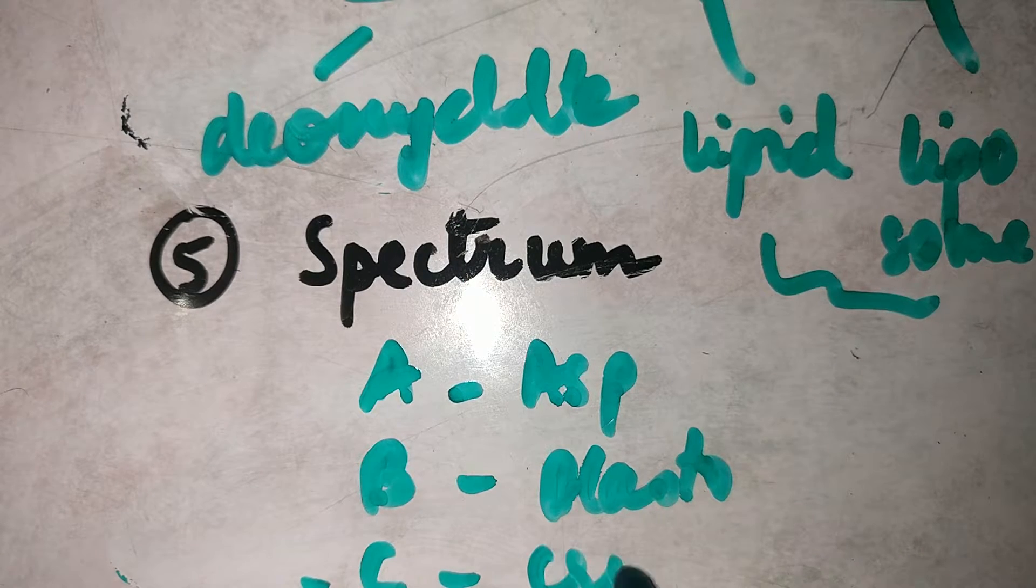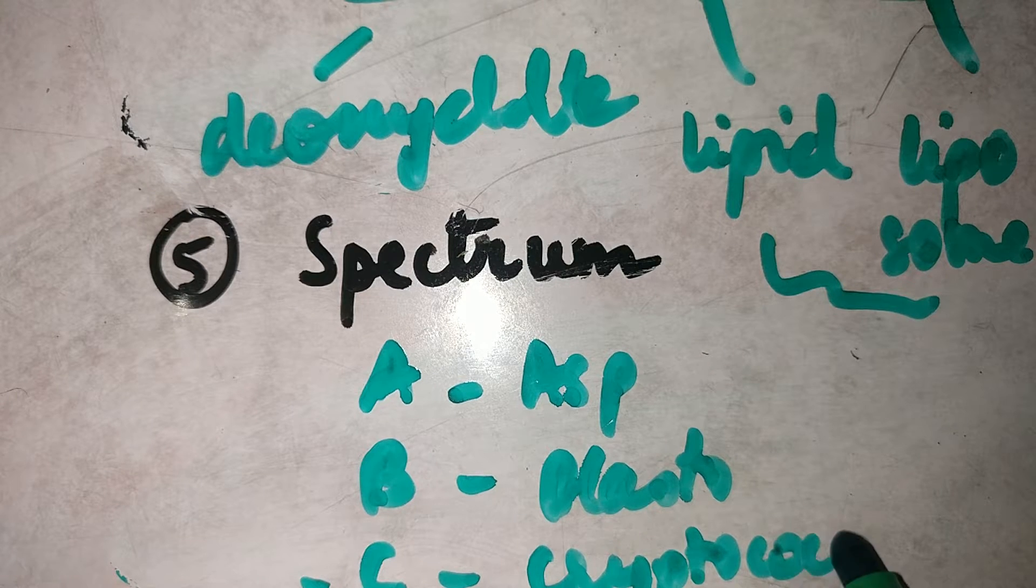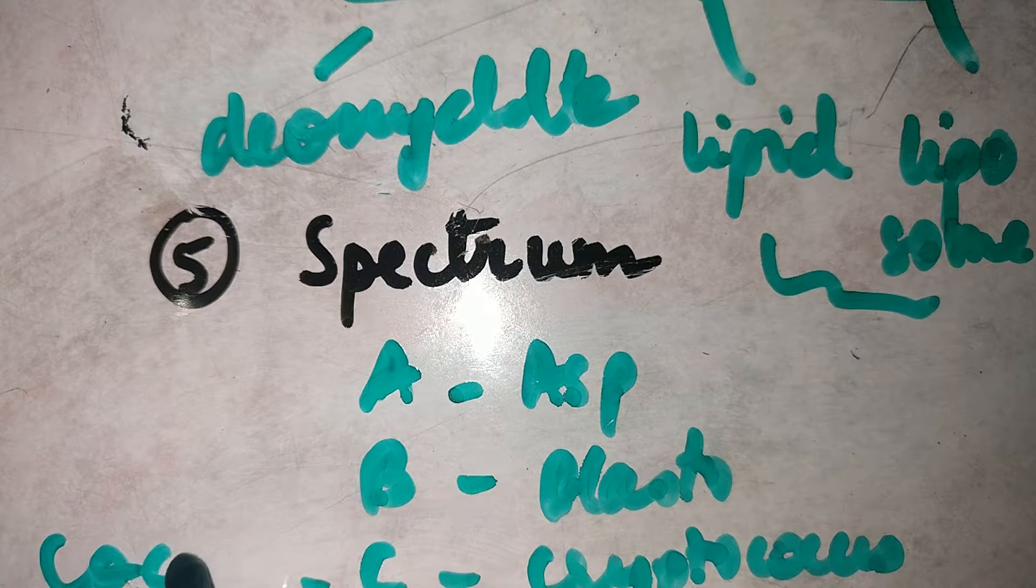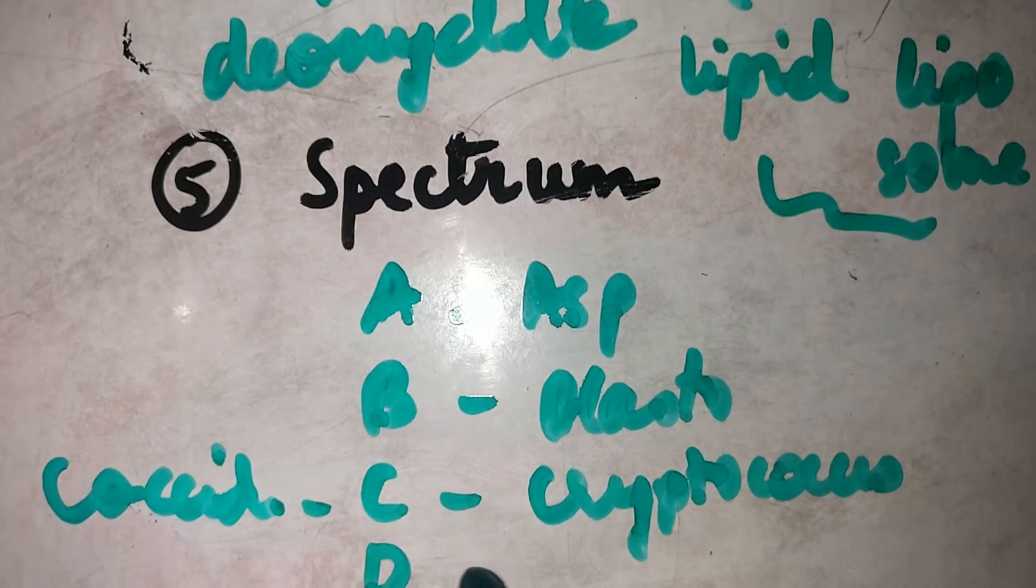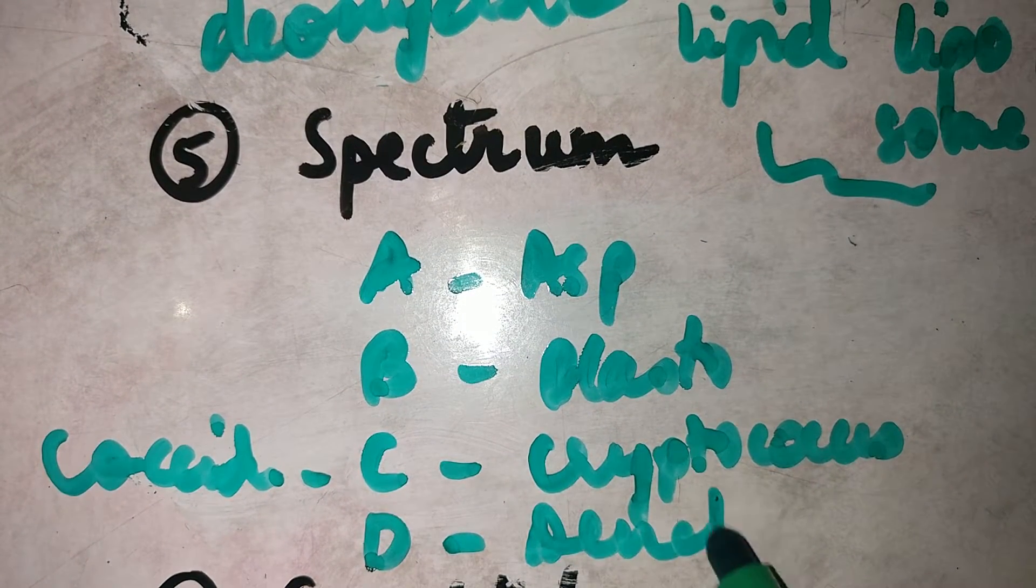C, there are two things. The first one is Cryptococcal Meningitis and the next one is Coccidioides and D stands for Dematiaceous Fungi.